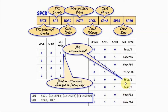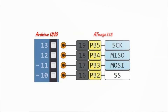According to the data sheet, one of those rates is not recommended, so we actually have seven clock rates. The oscillator frequency, in our case, is 16 MHz. This block diagram shows the SPI pins on the ATmega328, which are available on port B from PB2 to PB5. On the Arduino UNO side, these correspond to digital pins 10 to 13.